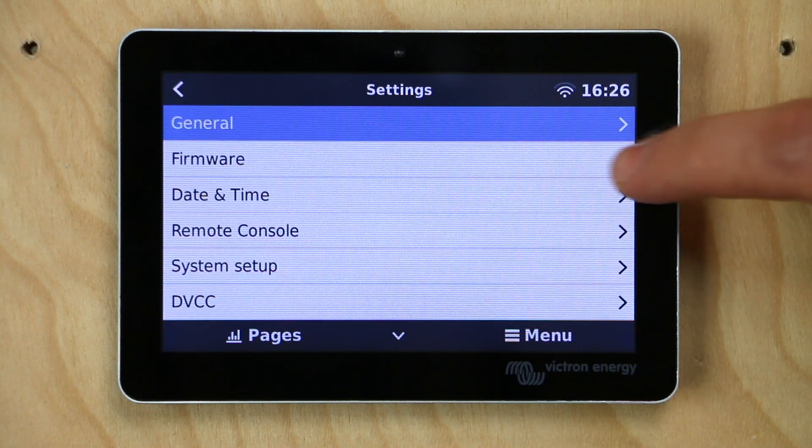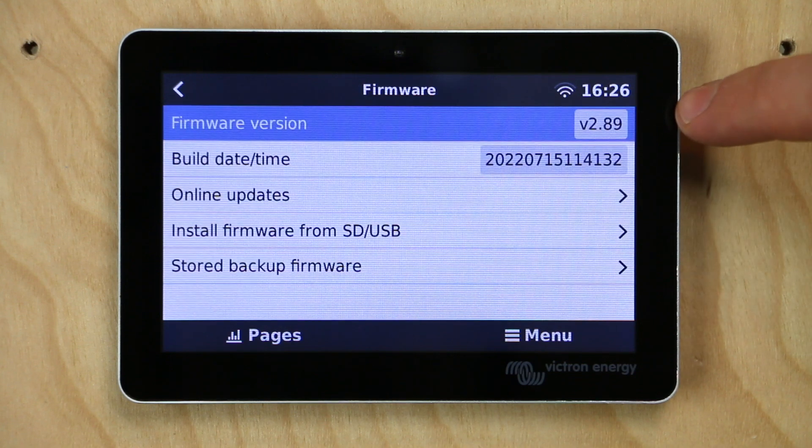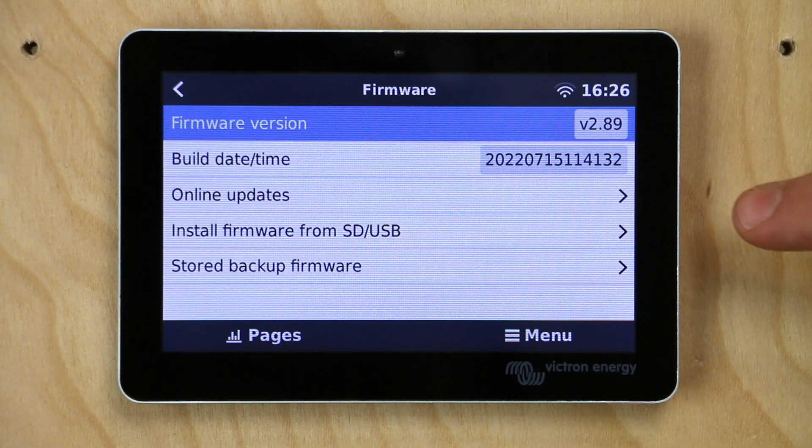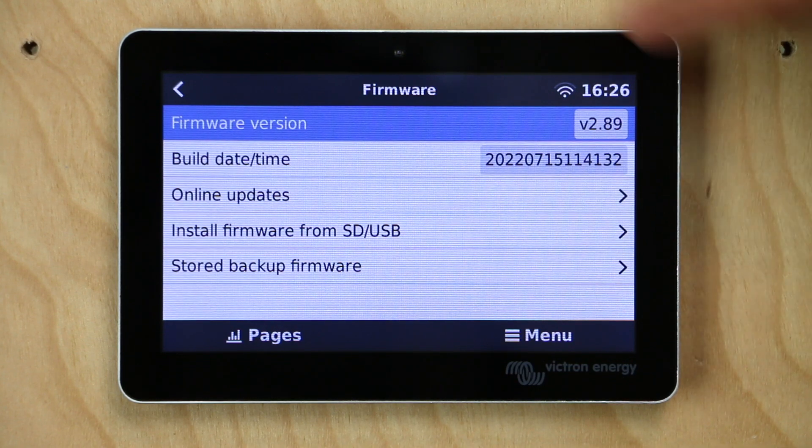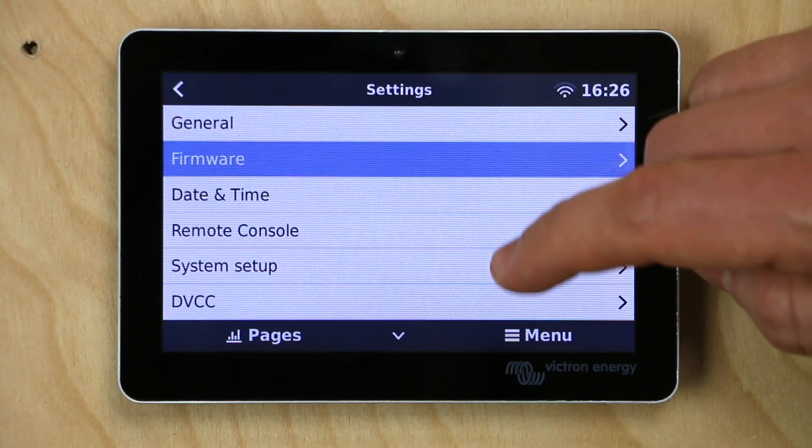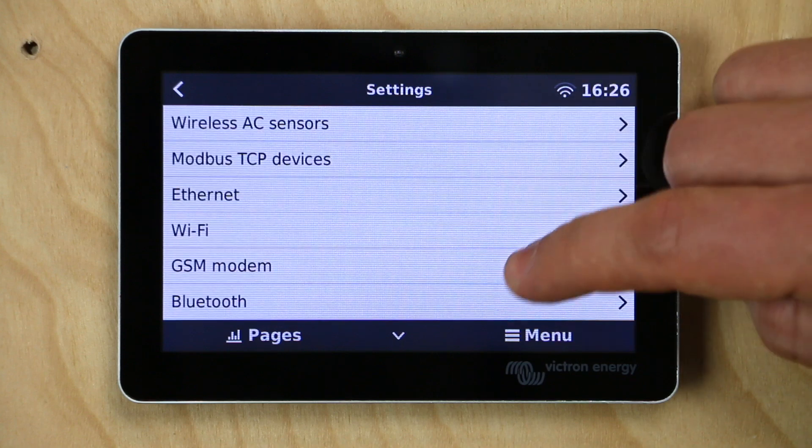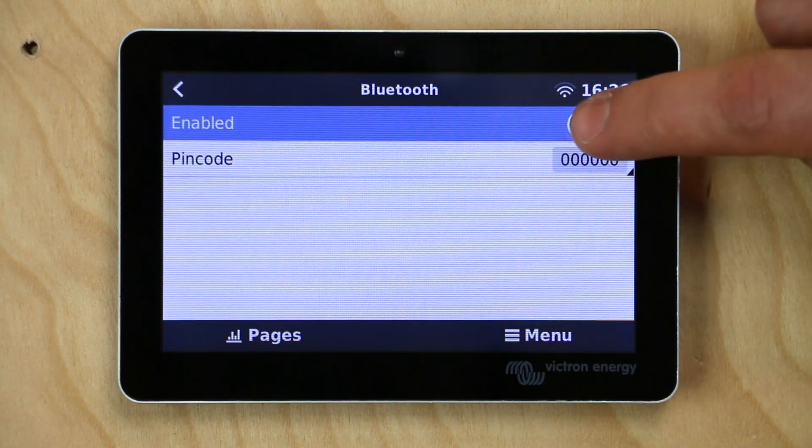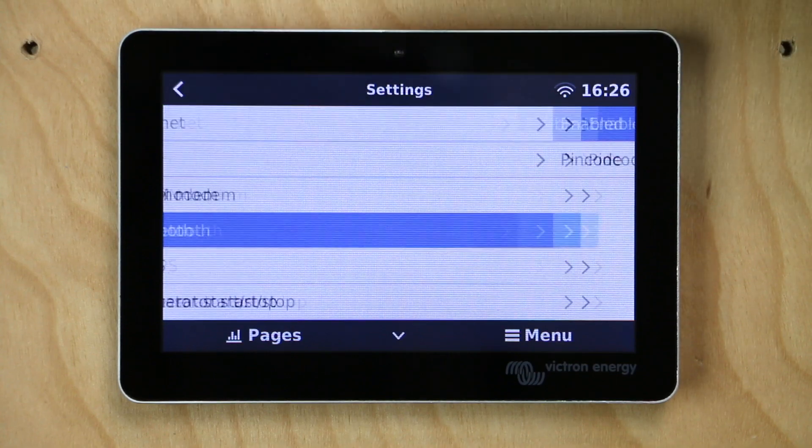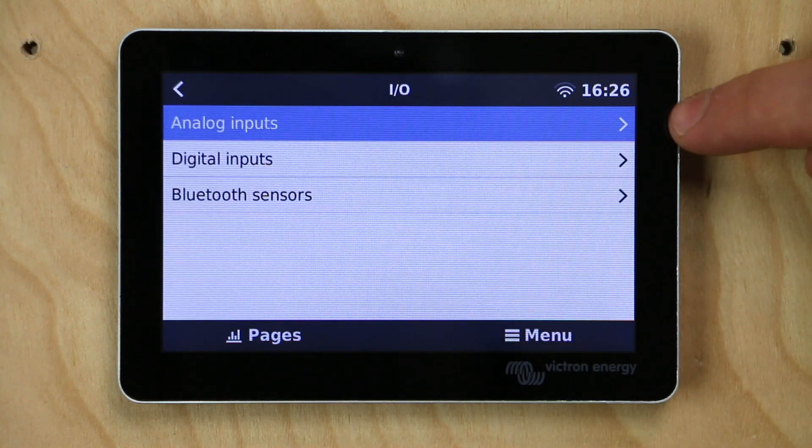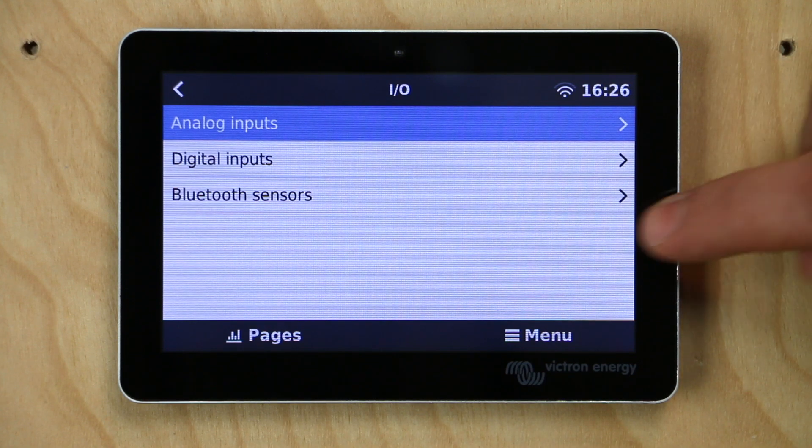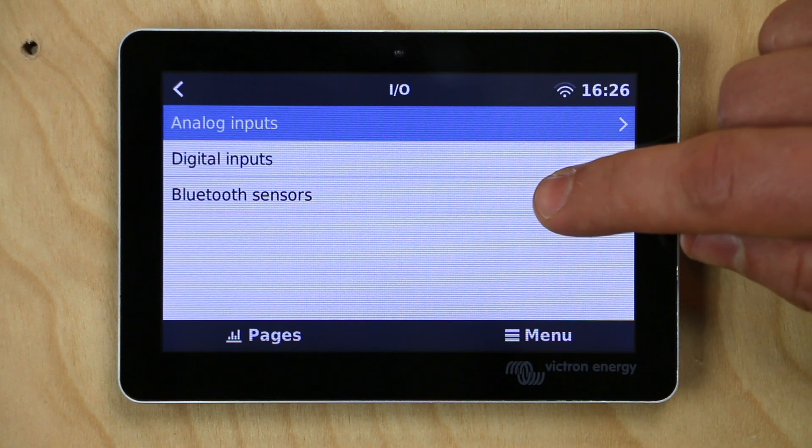And the first stop is going to be firmware. We want to make sure the firmware is up to date. I believe it was version 2.80 where the Ruuvi tags were able to be read by the Cerbo. So if you don't see what I'm about to show you, go to firmware and make sure that your firmware has been updated. So we're good to go here. Next up, we're going to stop at the Bluetooth setting. We're going to make sure that says enabled. And then we're going to go all the way to the bottom where it says IO. And you can see it says analog and digital. That used to be all that was shown here, but with the new firmware update, we now have a section for Bluetooth sensors. So we're going to click on that.